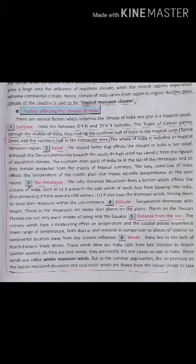2. Relief — mountains are located on the northern fringe of the country where cold climate is found, whereas central India and the deserts of Rajasthan have an extreme type of climate. On the other hand, coastal regions are influenced by oceanic influence and have lower temperatures than other places.